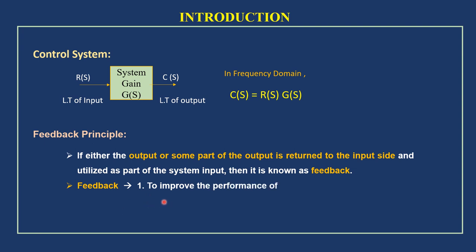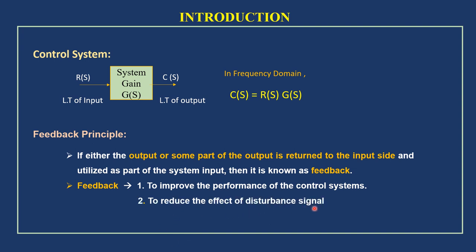The feedback element is used to improve the performance of control systems. Using the feedback control system, we can reduce the effect of disturbance signals — any disturbance signal can be reduced by using the feedback system. It also helps to reduce the steady-state error in the time domain. These are the advantages of the feedback element, and it plays an important role in the control system.